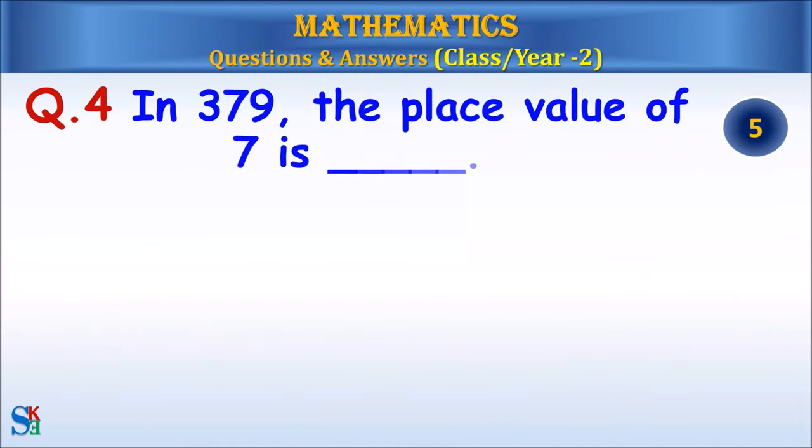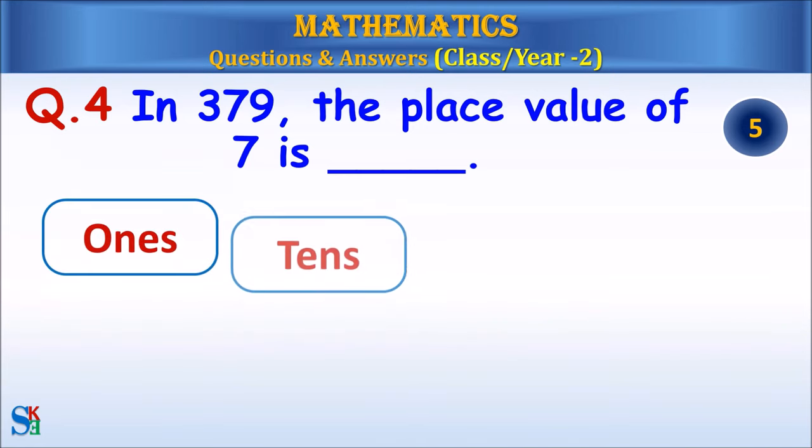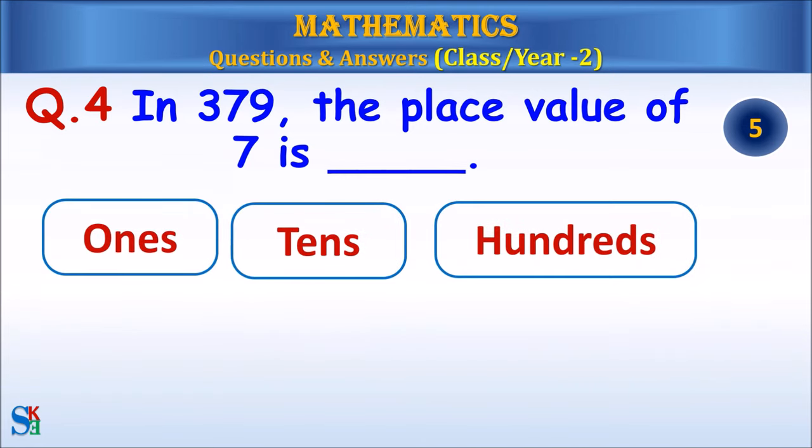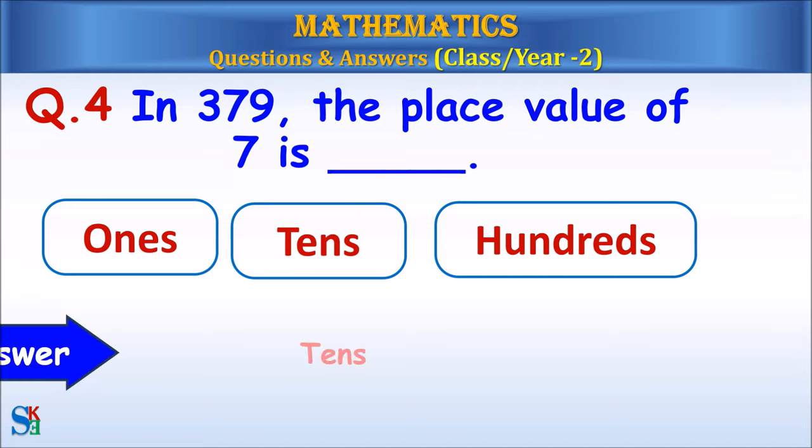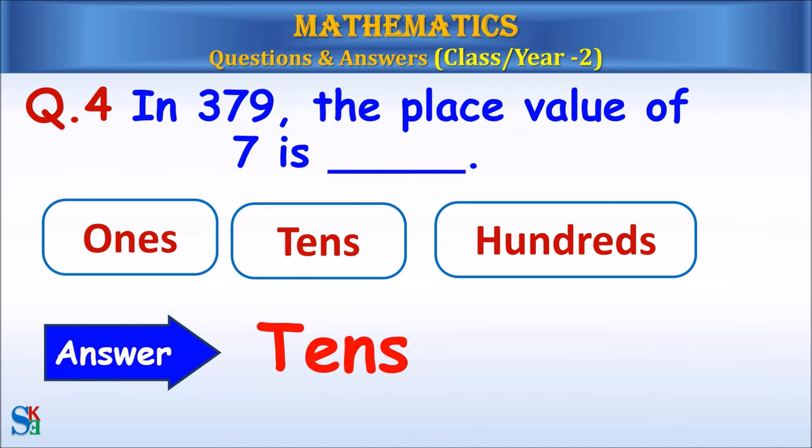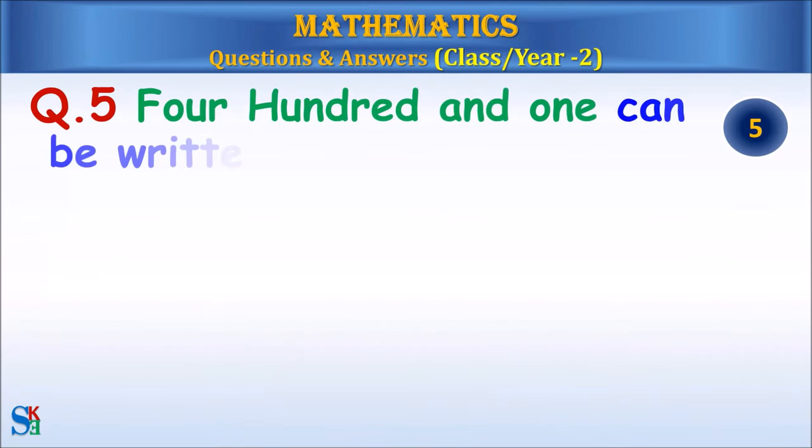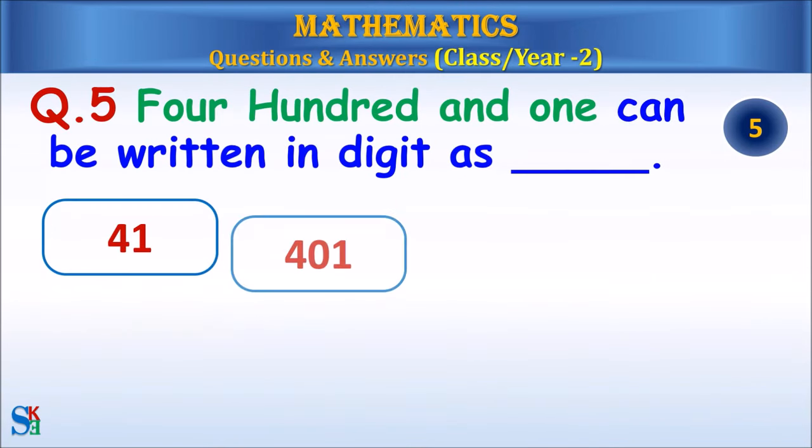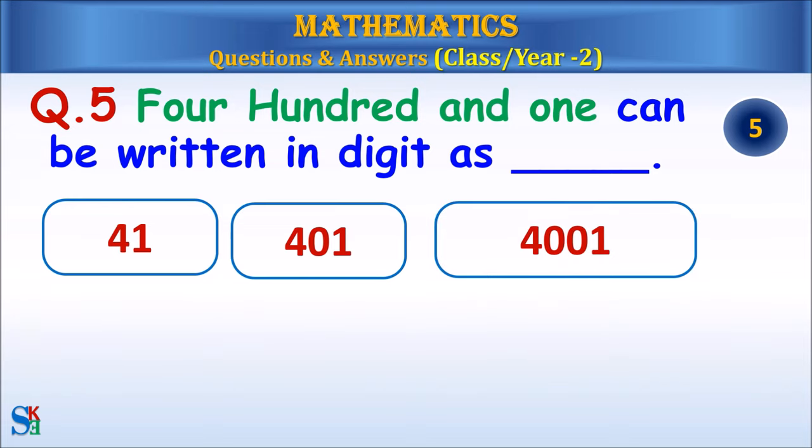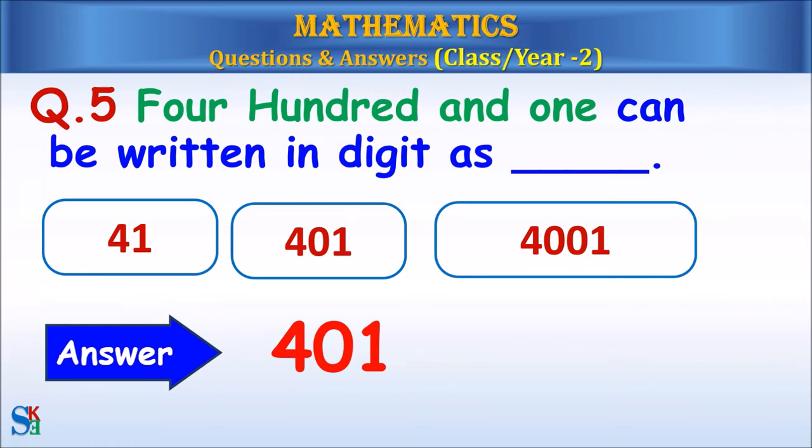Question 4: In 379, the place value of 7 is? Answer: 70. Question 5: 401 can be written in digits as? Answer: 401.